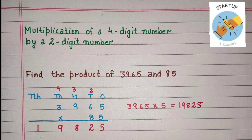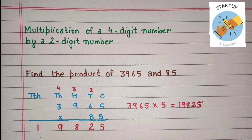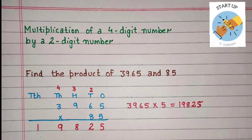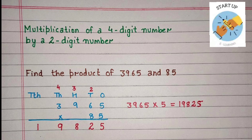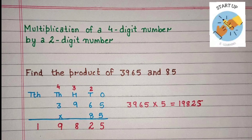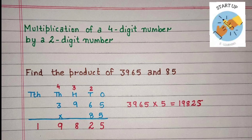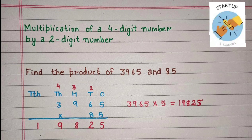Now 5 will be multiplied by 6, the digit at the 10's place. 5 sixes are 30, plus 2 carried over equals 32. 2 will be written at the 10's place and 3 will be carried to the 100's place. Now let's multiply 5 by the digit at the 100's place. 5 nines are 45, plus 3 carried over equals 48. 8 will be written under the 100's place and 4 will be carried to the 1000's place.